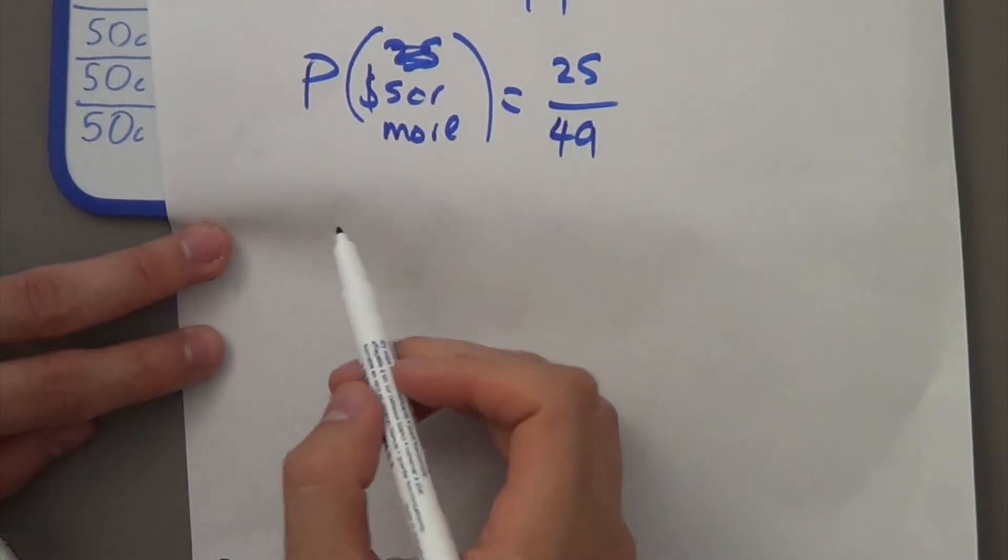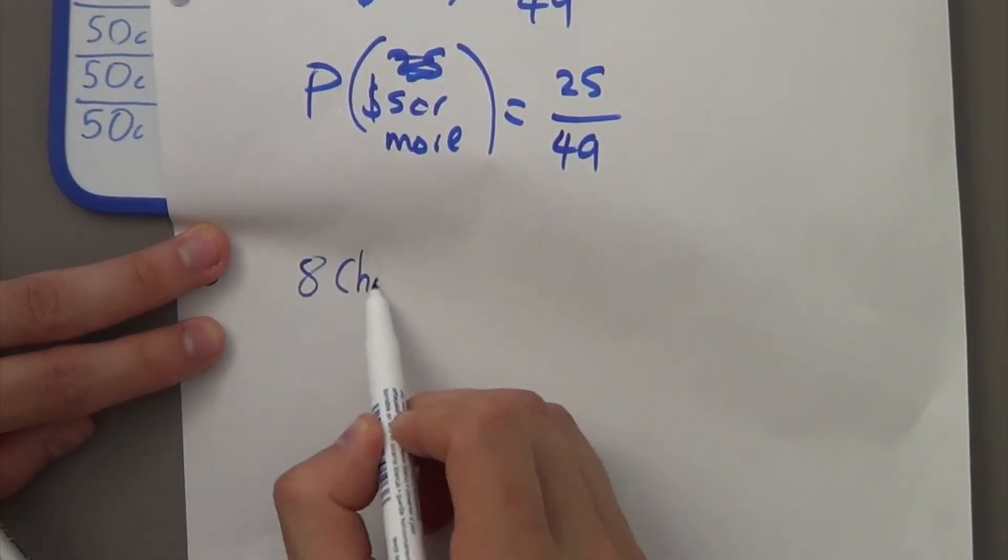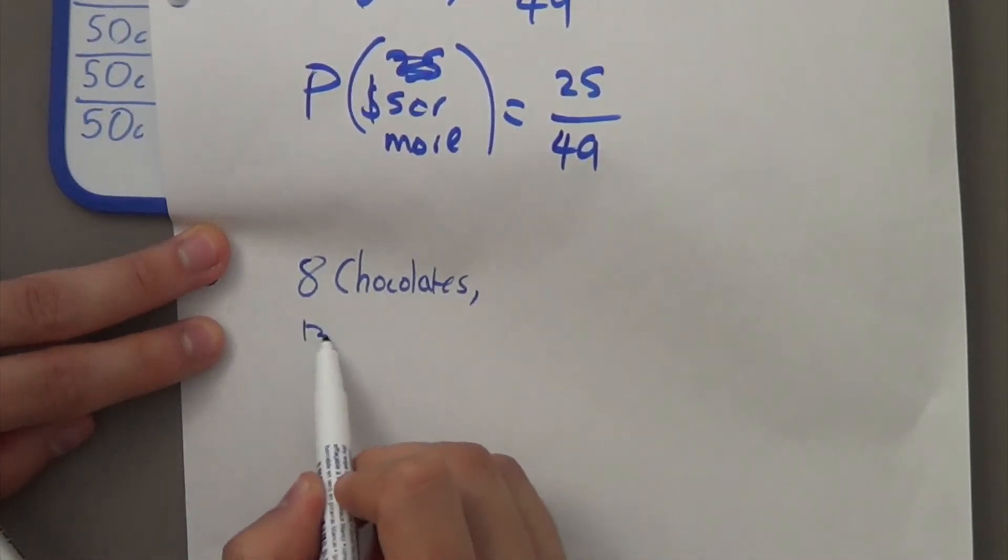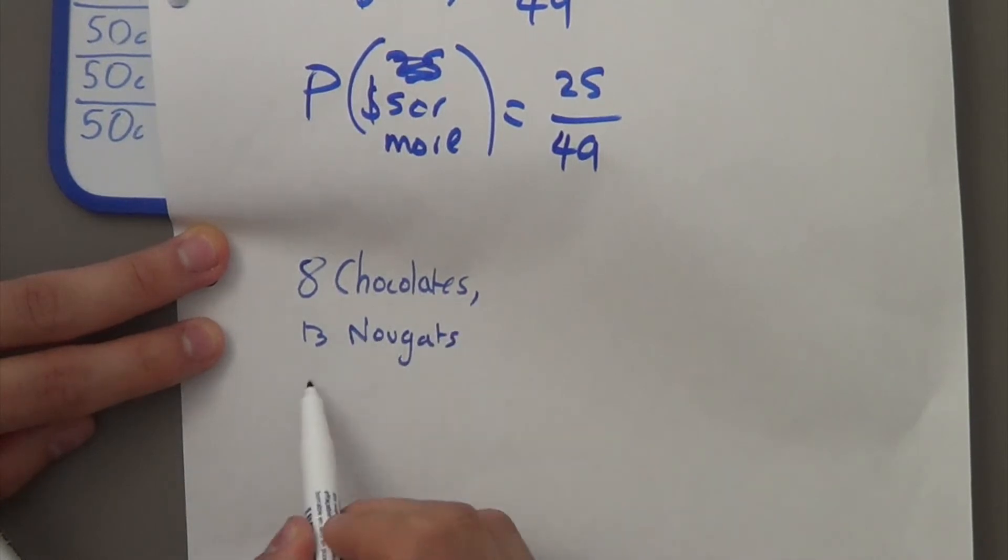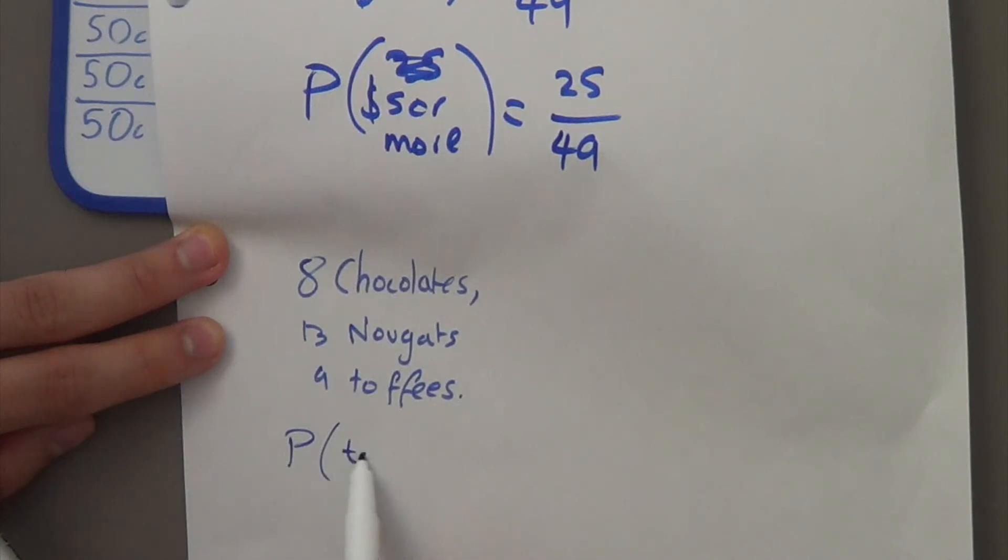Now, lastly, it says in your exam questions and the past paper questions, it says, a bag of 30 sweets contains 8 chocolates, 13 nuggets, 9 toffees, right? A sweet is selected at random and then what is the probability that it is a toffee? So, the probability that it's a toffee is going to be 9 out of 30. Because if we added up 8 plus 13 plus 9, it would give us 30. So, it's going to be 9 out of 30, which can be simplified to 3 over 10, which is equal to 30%, 0.3. Now, as I said, if you left it as 3 over 10, that's perfectly fine. And that's the end of probability.